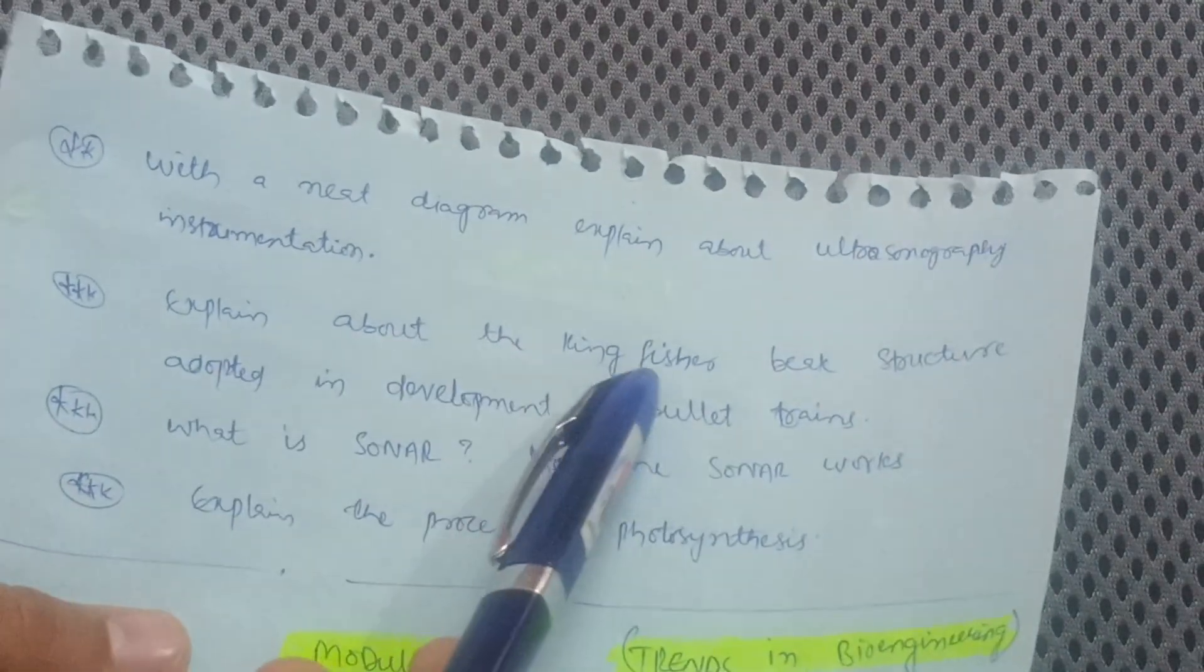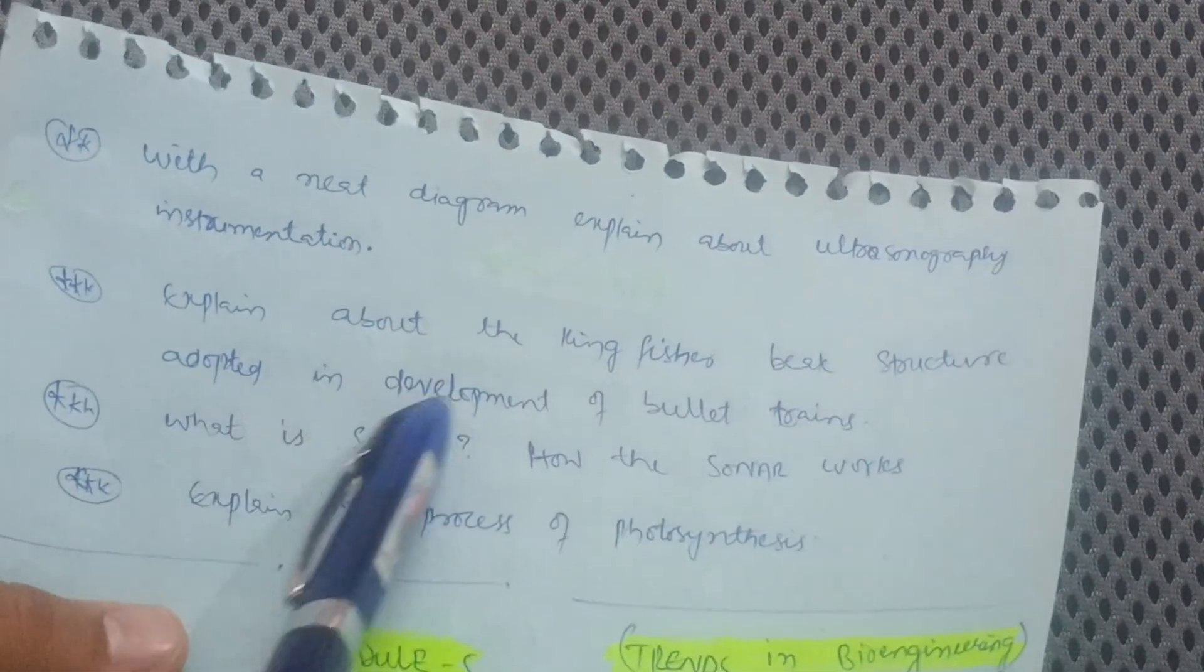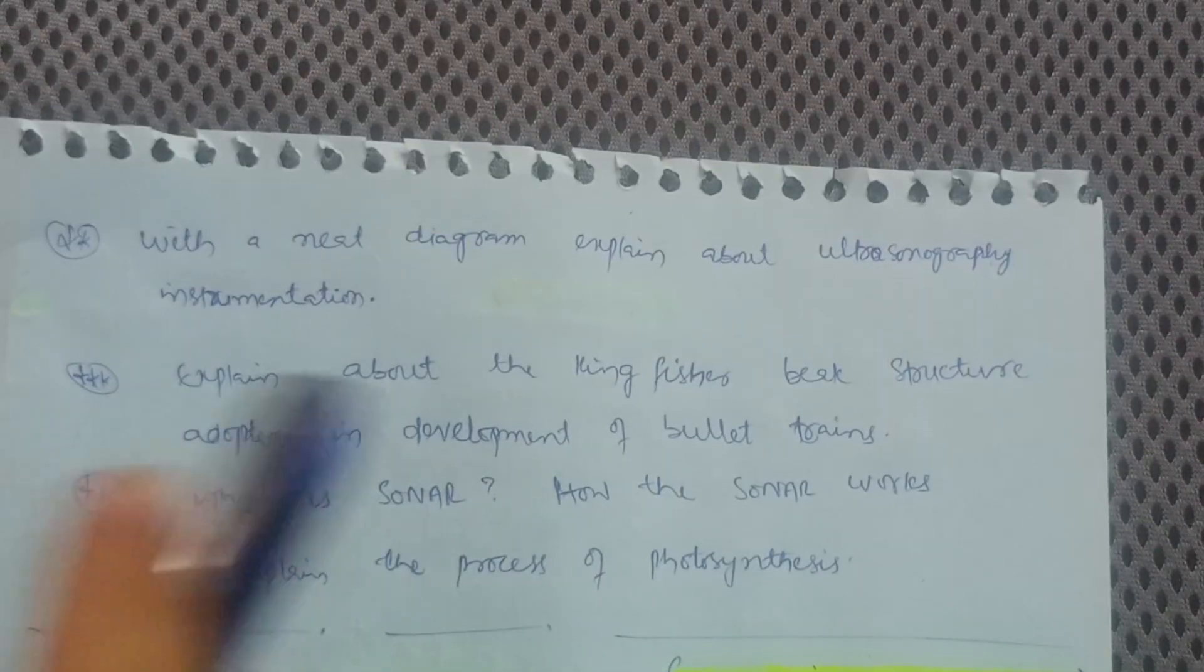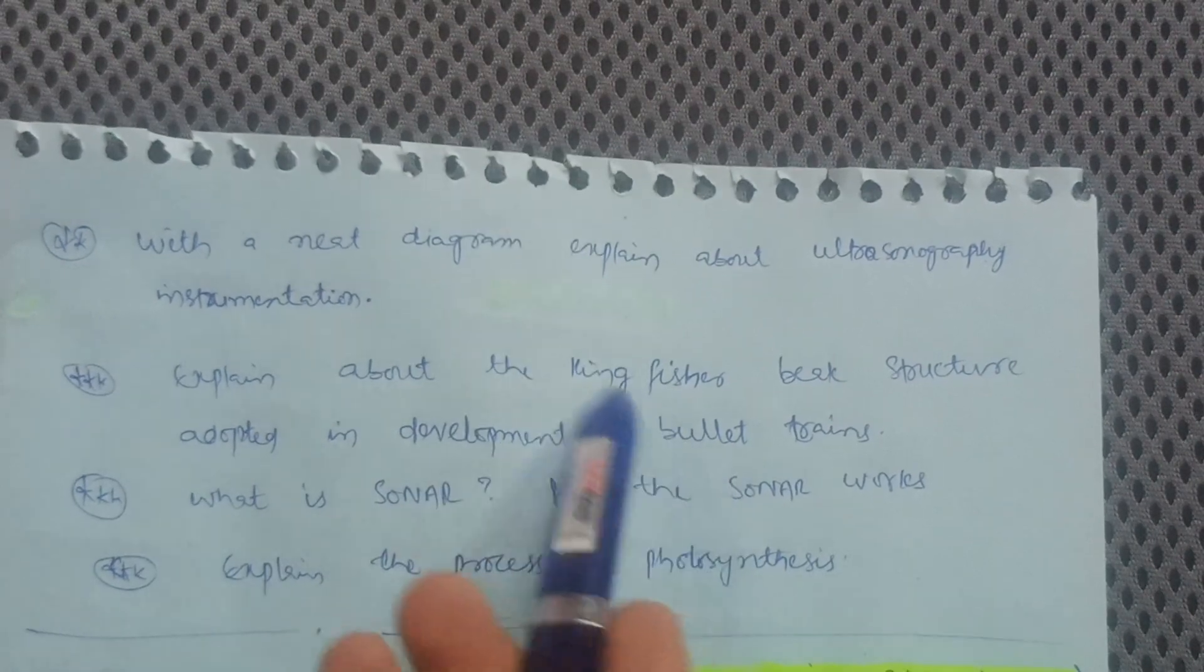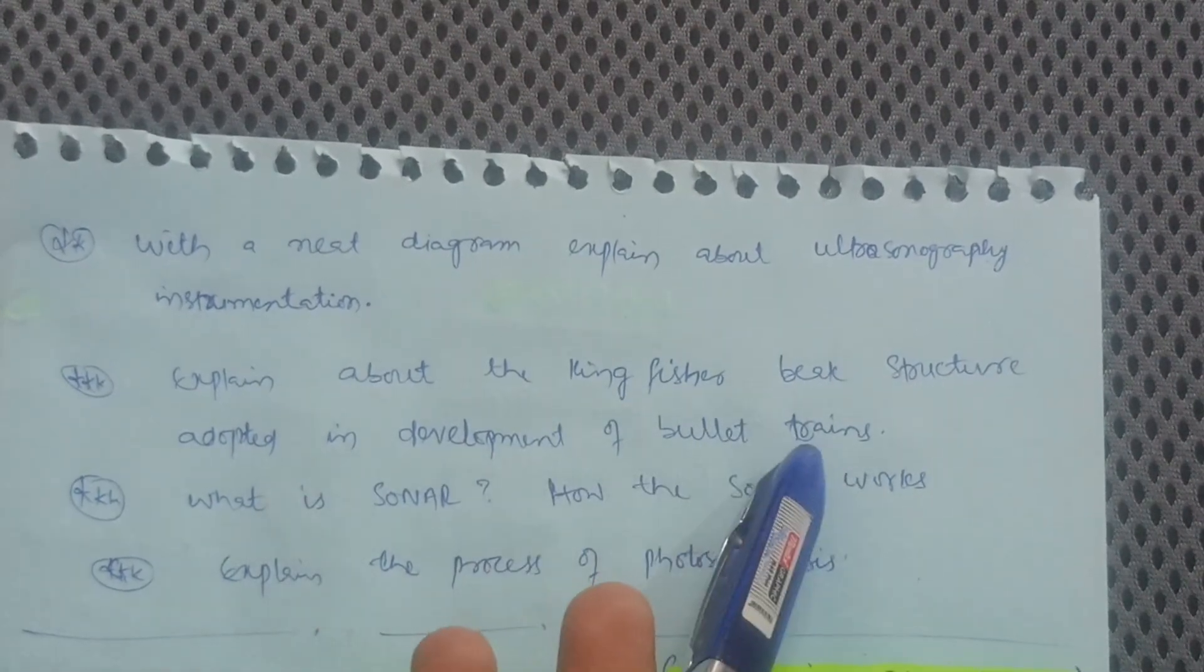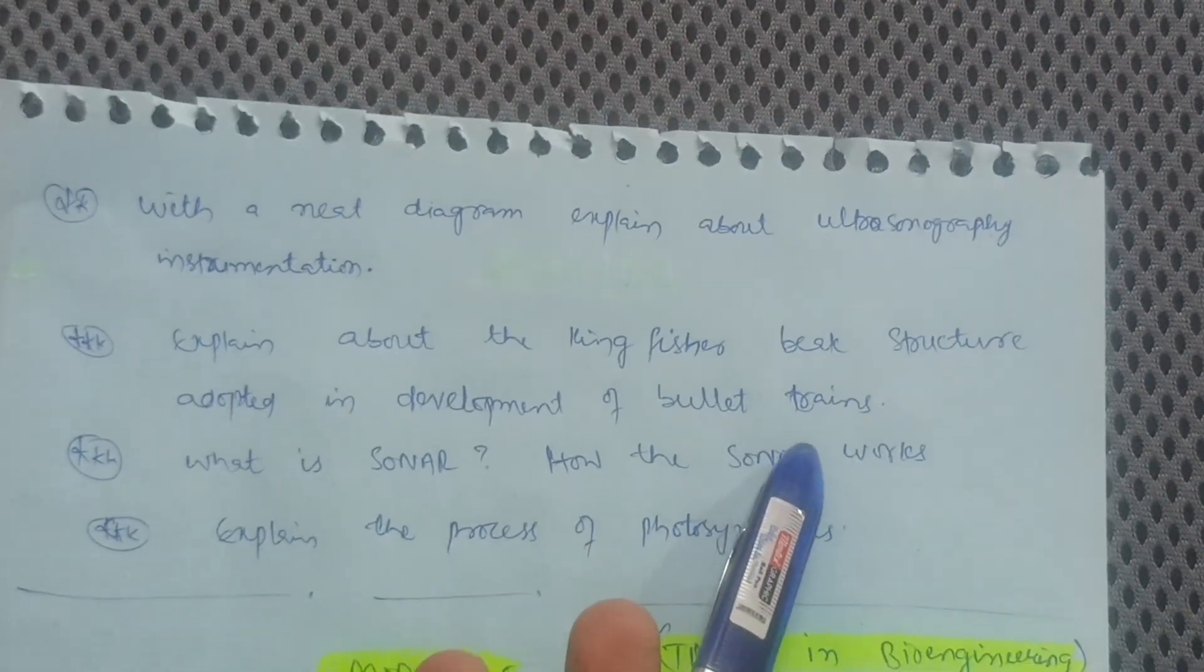You have to write neat sketches for this particular question, that is ultrasonography. Explain about the kingfisher beak structure adopted in development of bullet trains. Give the importance for these questions. Here is the use of engineering, how the kingfisher beak structure adopted in development of bullet trains. It is used in the engineering part.